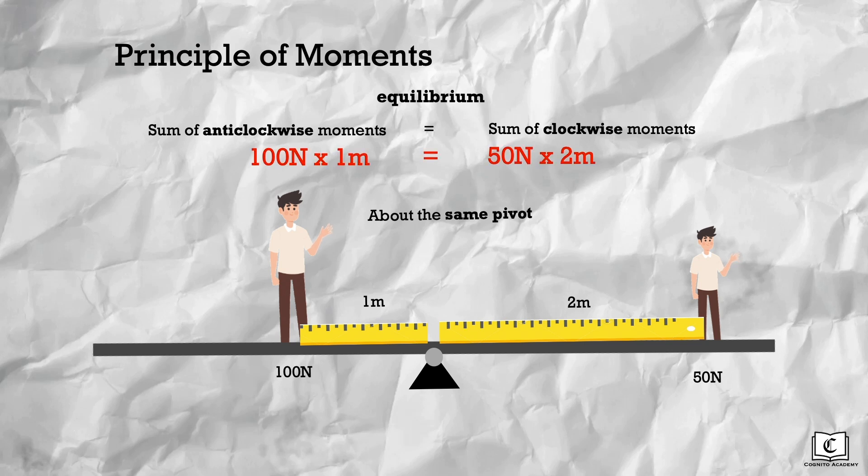So as we can see from the above calculation, the anticlockwise moment is numerically equal to the clockwise moment. Hence, this seesaw is in equilibrium.